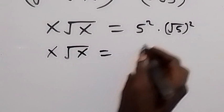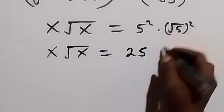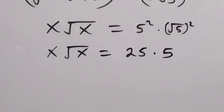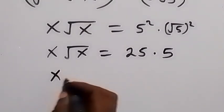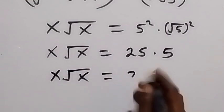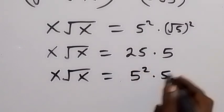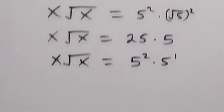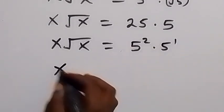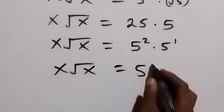5 squared gives us 25, and root 5 squared — the square cancels the root — and we have times 5. Then we can write 25 in base 5: 25 can be written as 5 squared, then it's 5 raised to power 1. From the law of indices, same base multiply — we add the powers together — and we have x root x equals to 5 raised to power 3.